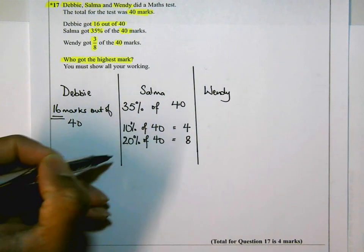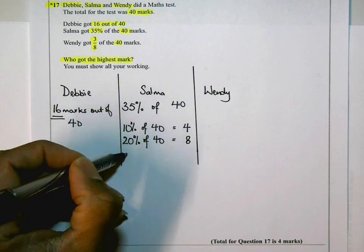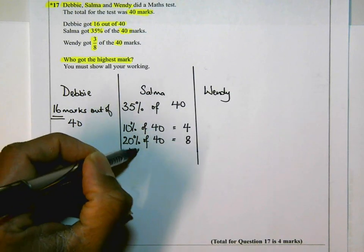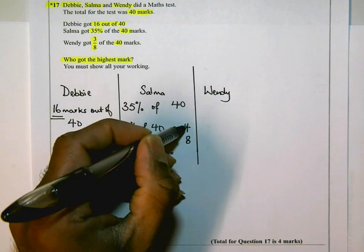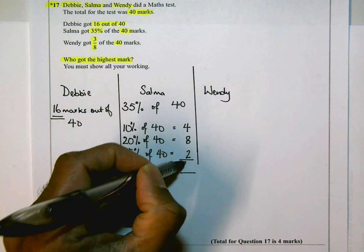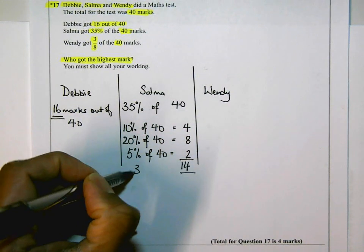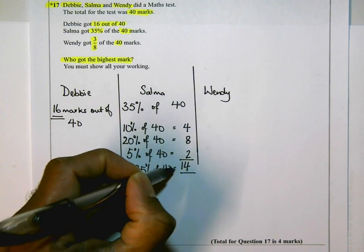So together there I've got 30%, but I need 35%. So if I half the 10 to get my 5%, 5% of 40, half of 4 is 2. So add these all up together, and that gives me 14. 35% of 40 is equal to 14 marks.